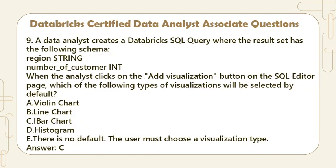Question 9. A data analyst creates a Databricks SQL query where the result set has the following schema: Region (string), Number_of_customer (int). When the analyst clicks on the Add Visualization button on the SQL Editor page, which of the following types of visualizations will be selected by default? A. Violin chart. B. Line chart. C. Bar chart. D. Histogram. E. There is no default — the user must choose a visualization type. Answer: C.